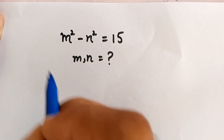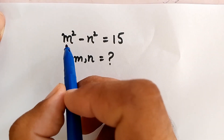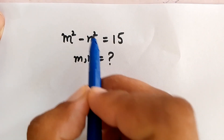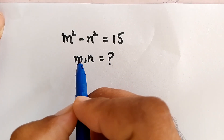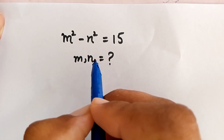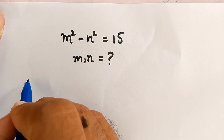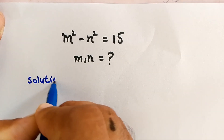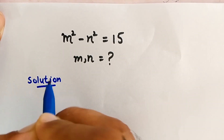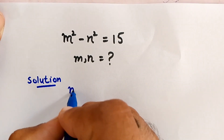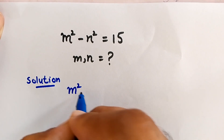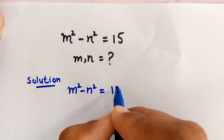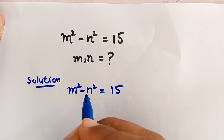Hello, you are welcome. Today we have to solve the interesting math question: m squared minus n squared is equal to 15, and we have to find the value of m and n.